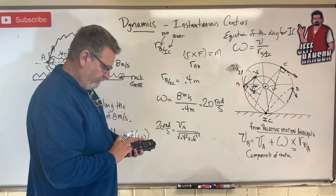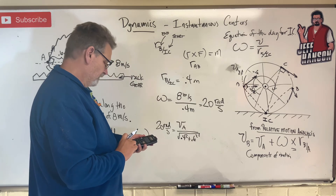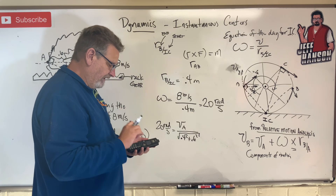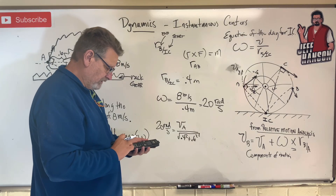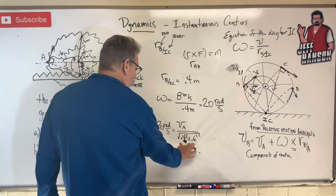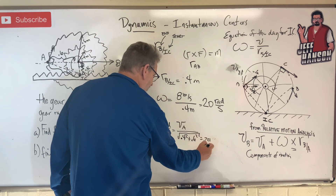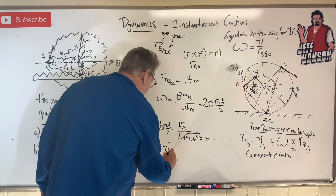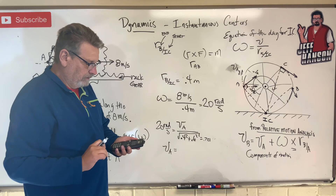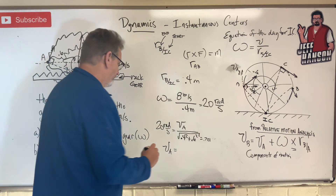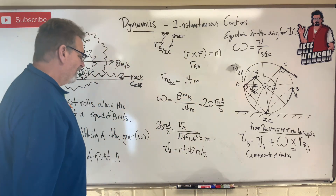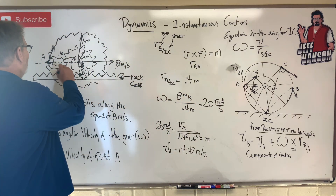0.4 squared plus 0.6 squared equals 0.52, and the square root gives 0.721. So r_A with respect to IC is 0.721 meters. Multiply that by 20 and the velocity of point A equals 14.42 meters per second.